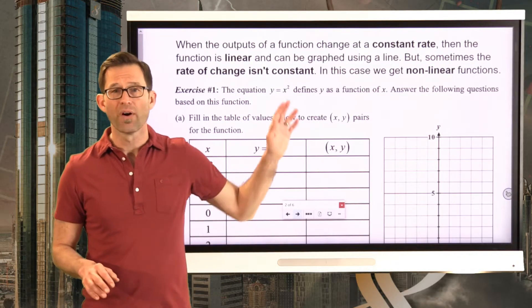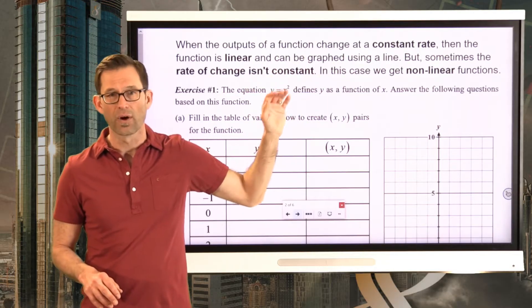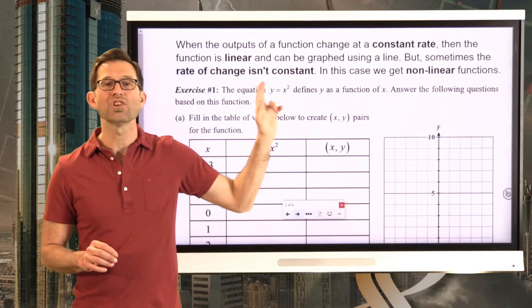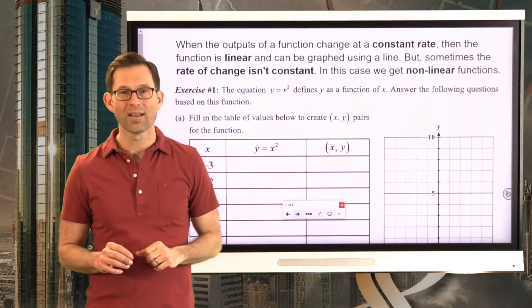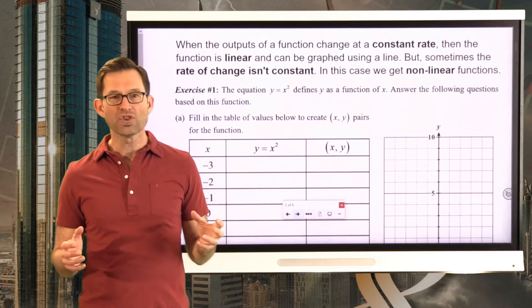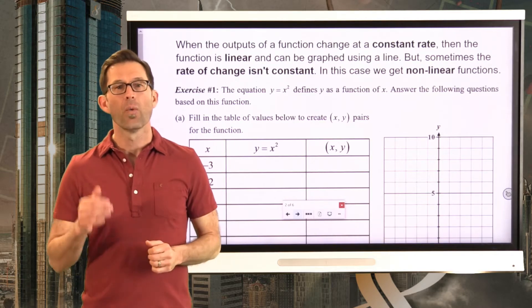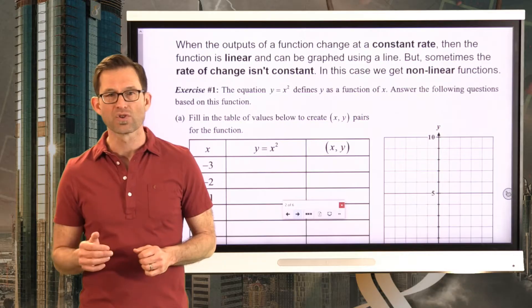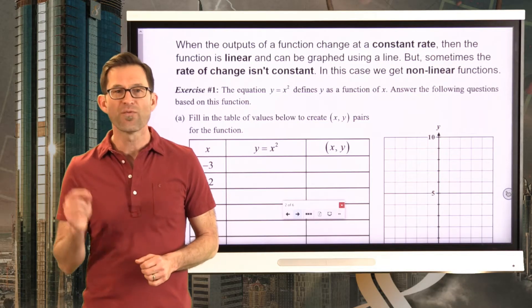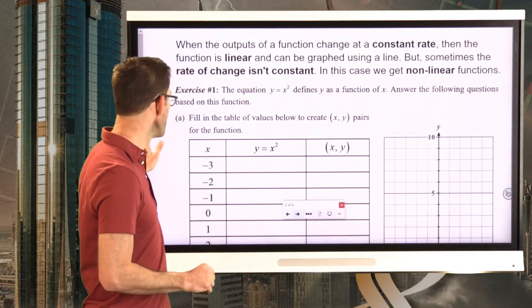When outputs of a function change at a constant rate, the function is linear and it can be graphed using a line. But sometimes the rate of change isn't constant. When that slope — that rate of change — changes, we get these non-linear functions. Let's look at perhaps the most famous non-linear function in exercise number one.